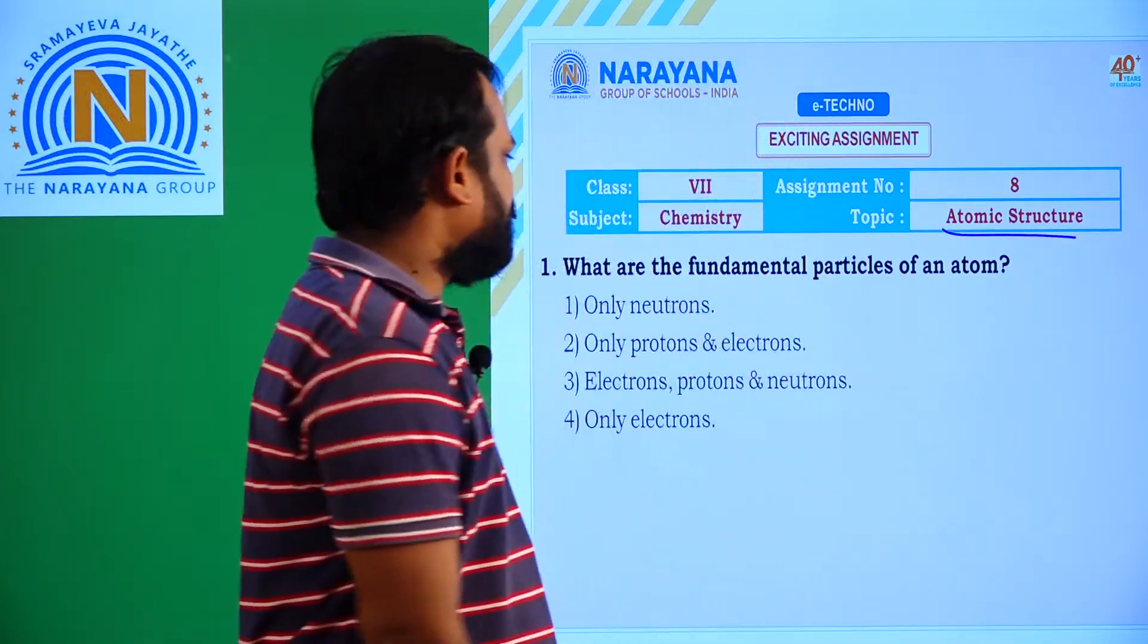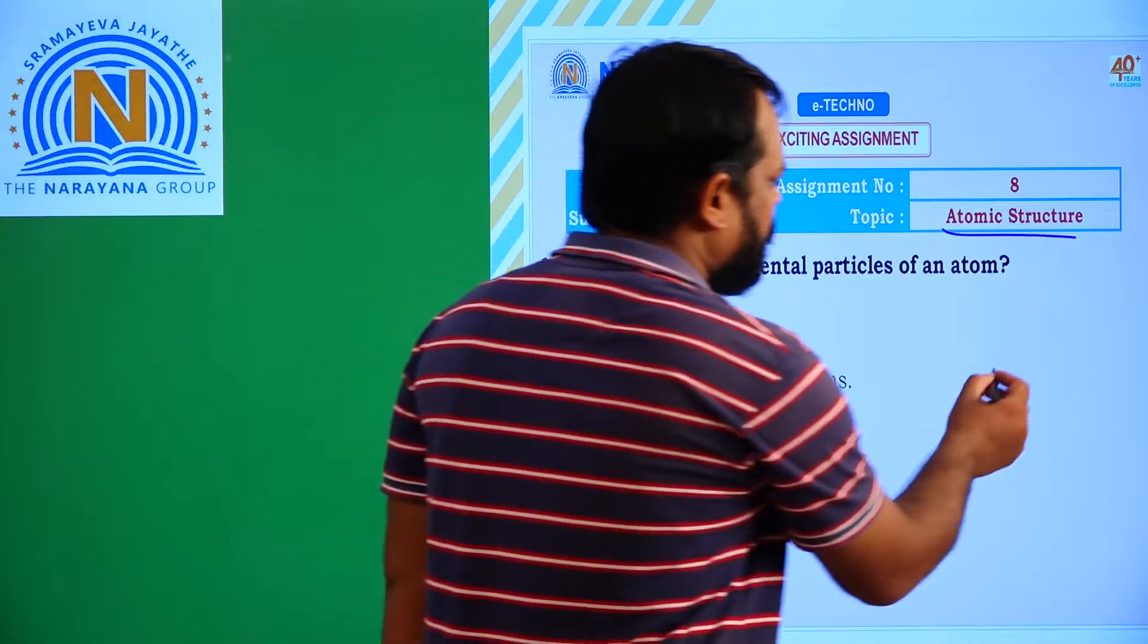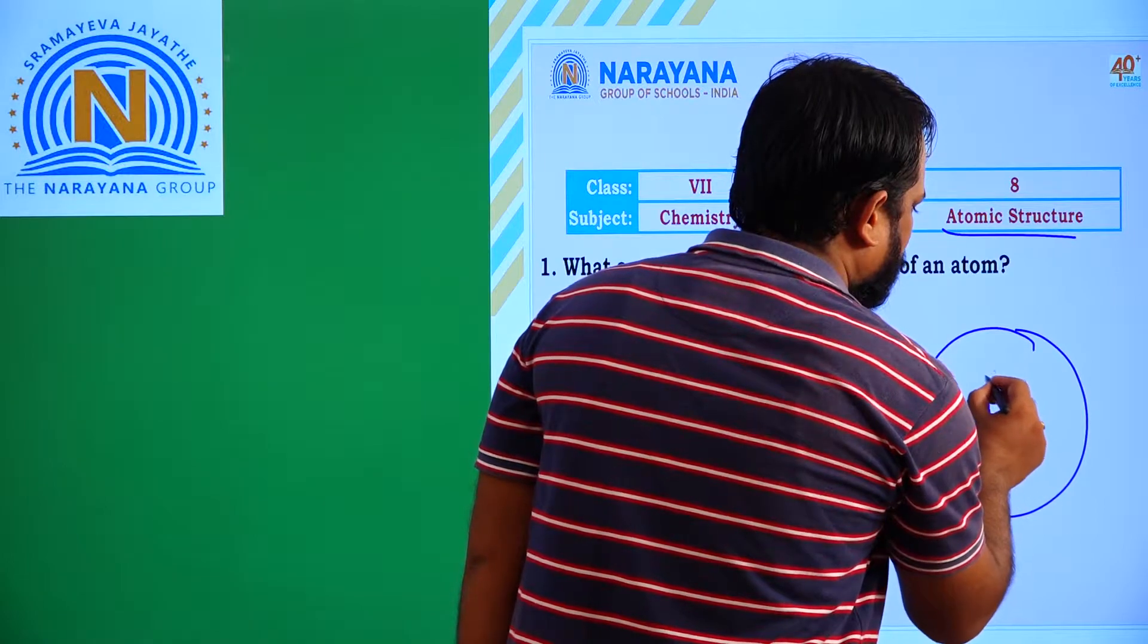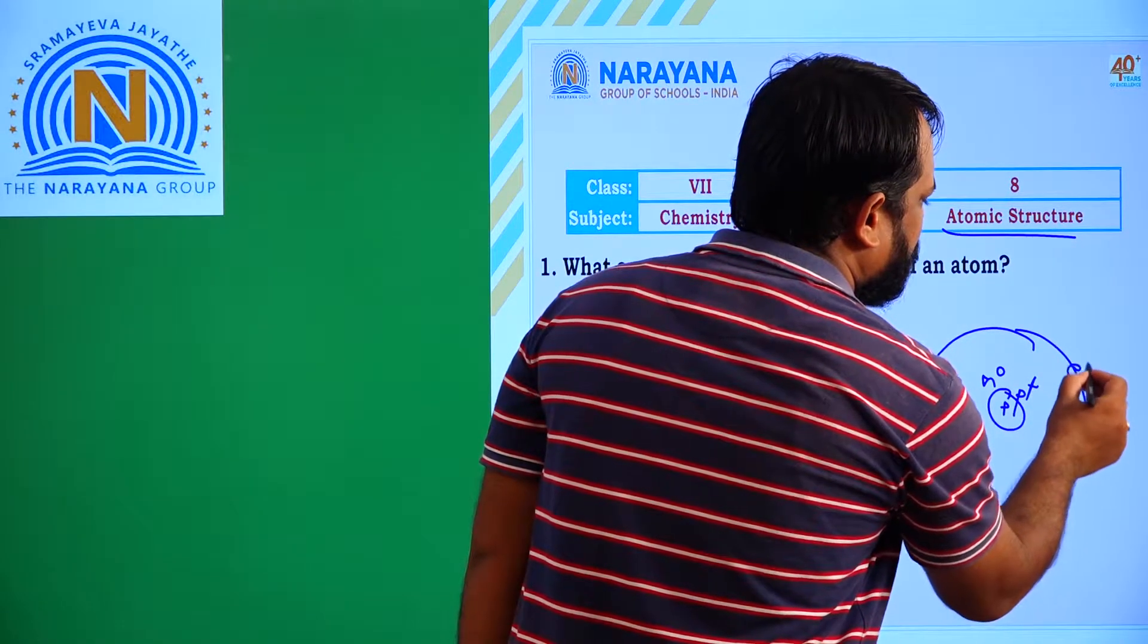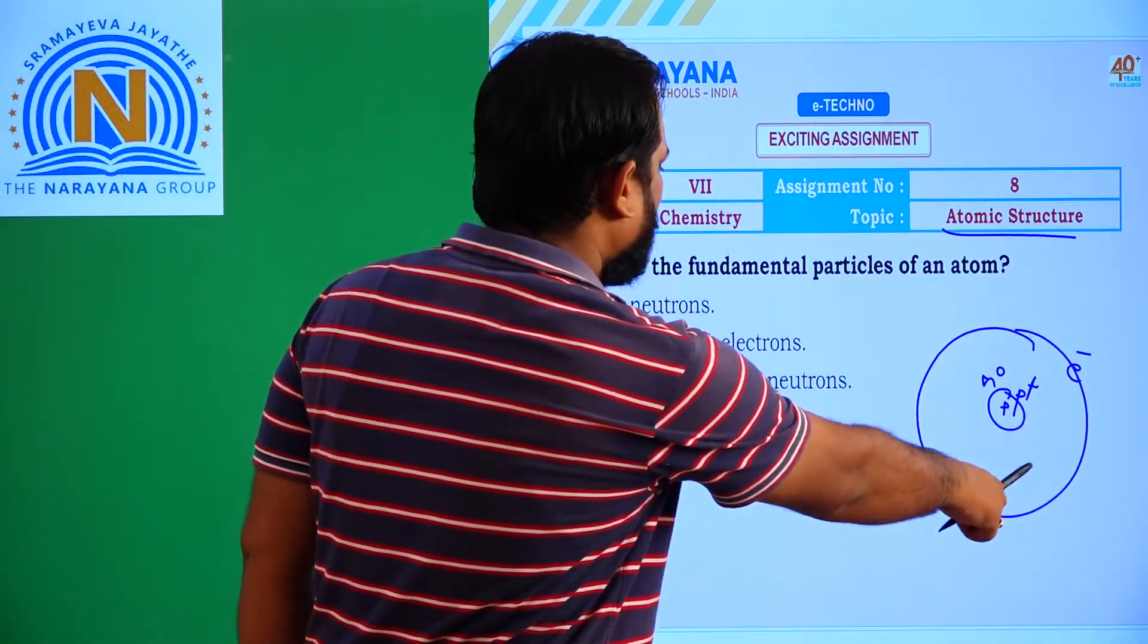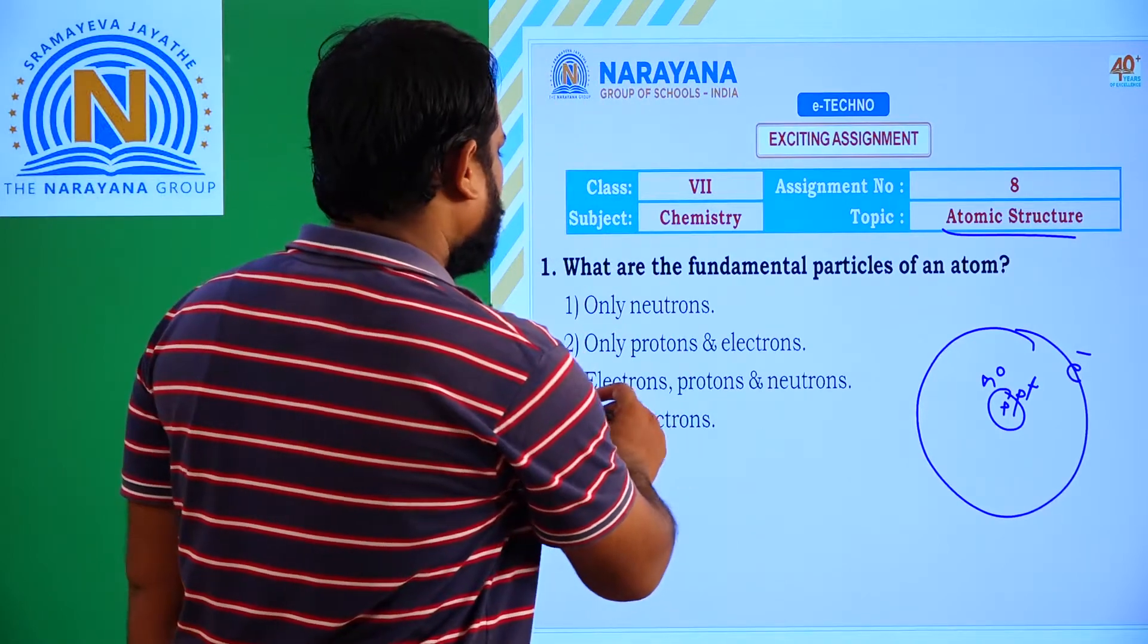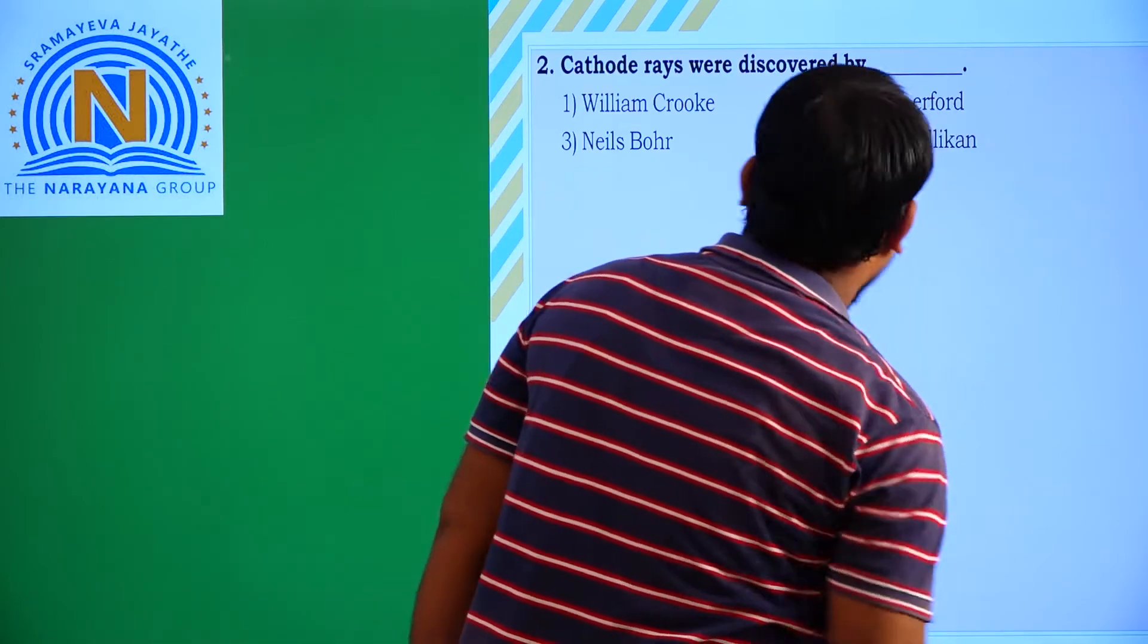Question number 1 is what are the fundamental particles of an atom? You all know the fundamental particles of an atom. Generally nucleus contains a positive charge, neutrons and protons are there, and electrons are revolving around the nucleus. That means electron, proton and neutrons all together, all these are fundamental particles of an atom. Which option? Third option is correct. And next we will move to next question.